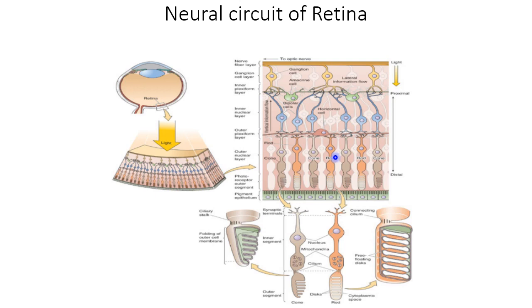This path causes minimal distortion because it is very thin and transparent. The pigment epithelium absorbs light that is not absorbed by the photoreceptor cells, which minimizes the reflection of stray light.